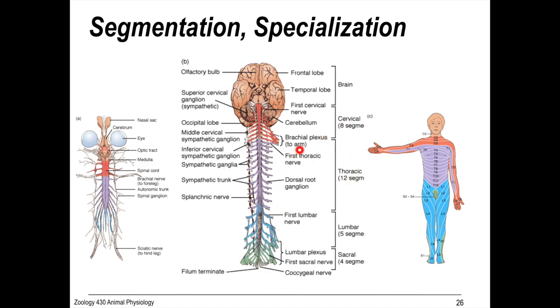Twelve thoracic segments, five lumbar segments. And then we have the hip here and the sacral segments, of which there are four. So this is the basic plan across vertebrates.